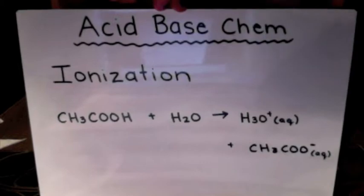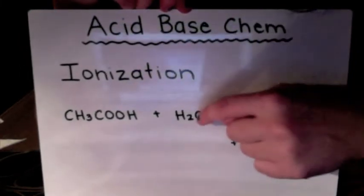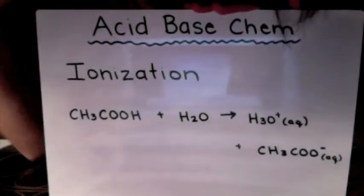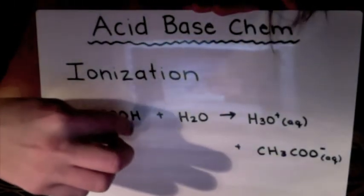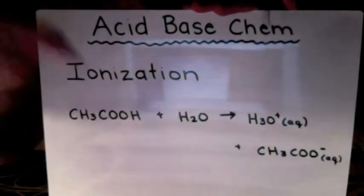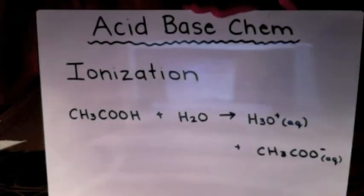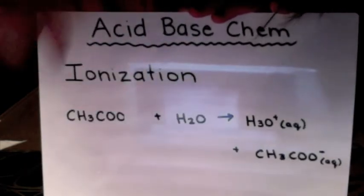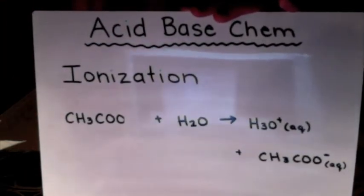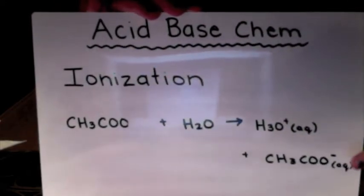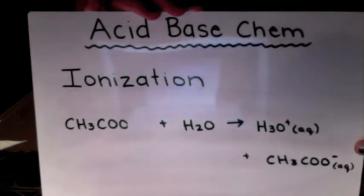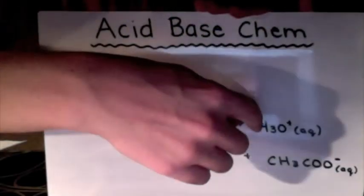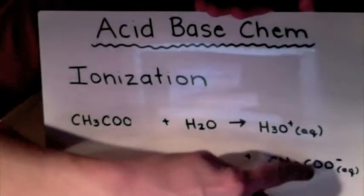What happens in an ionization is that the water molecule is going to attack the acid that you're given, and pull off that hydrogen from that acid to form the H₃O⁺. So if we take away that hydrogen, what's left is CH₃COO⁻ — it's going to have a negative charge because it's lost a proton. So you're always going to form H₃O⁺ and then whatever's left with a negative charge.